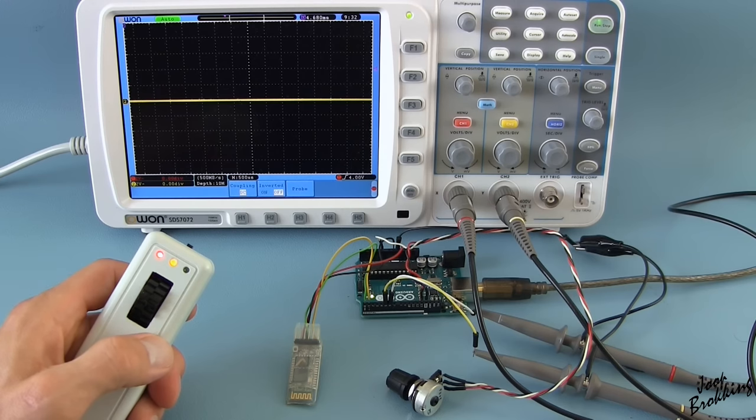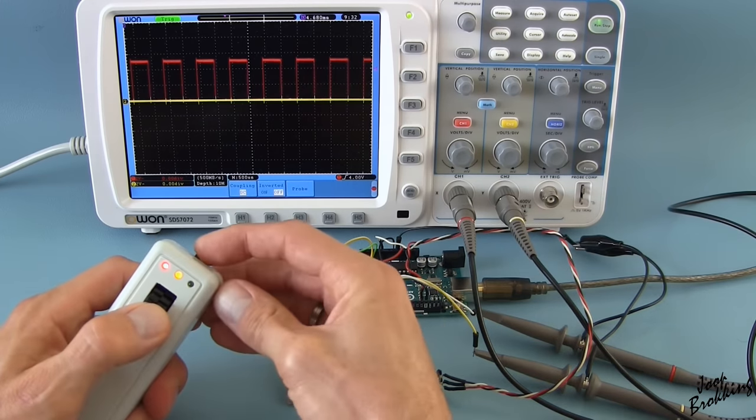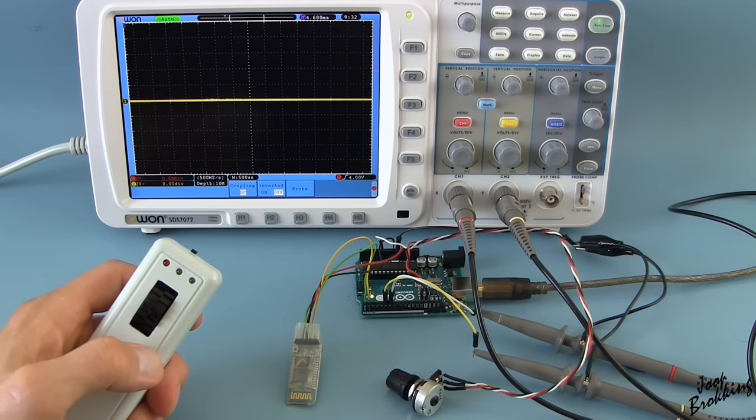If for some reason the communication between the two Bluetooth modules fails, both throttle and brake FETs are disabled. So the board comes to a gentle stop.